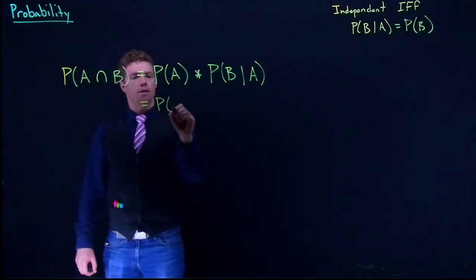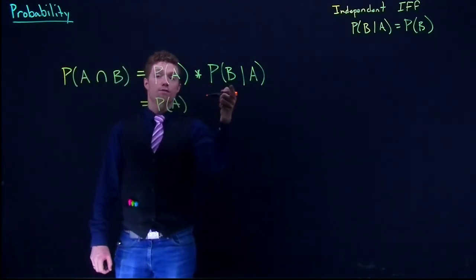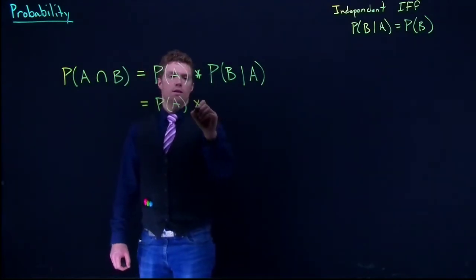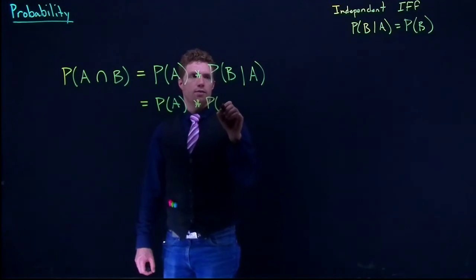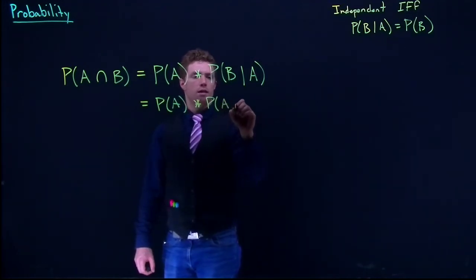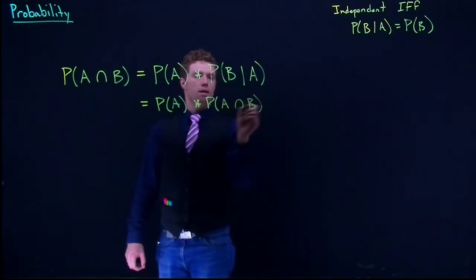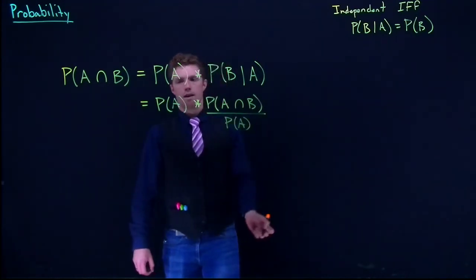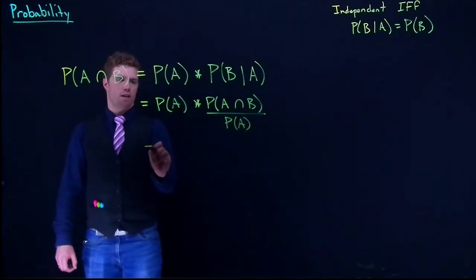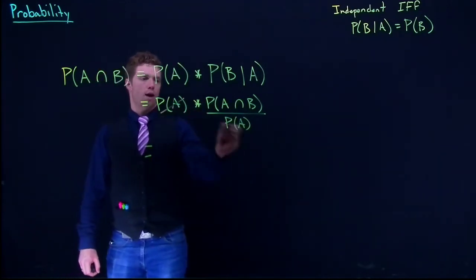It would be the probability of A—if this is in fact dependent, we would need to multiply by the probability of A intersect B divided by the probability of A—and by simplification, this drops